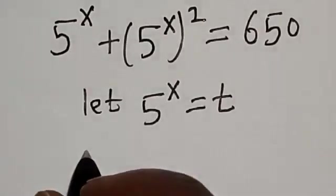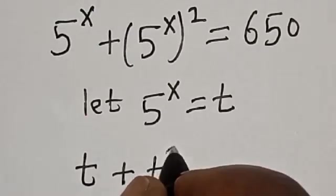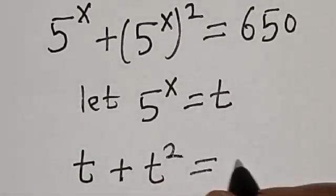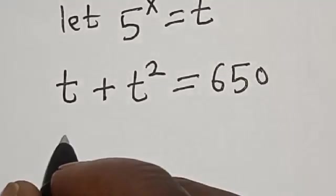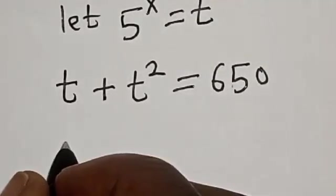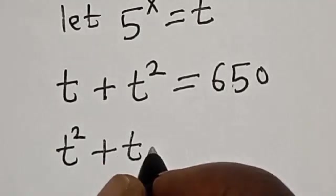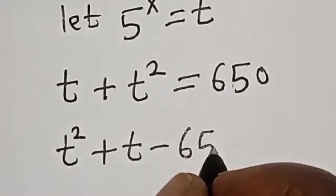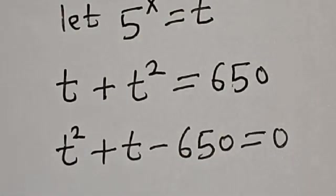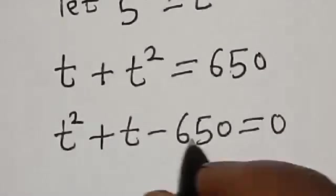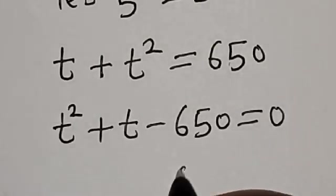So t plus t squared is equal to 650. Rearranging, t squared plus t minus 650 is equal to 0. This is a quadratic equation. Let's solve it using the factorization method.